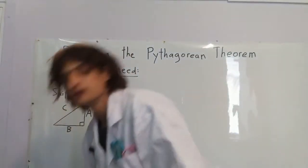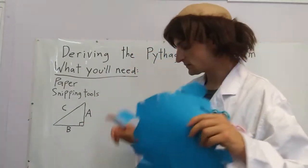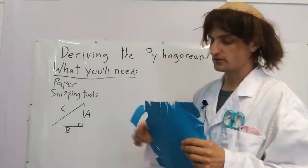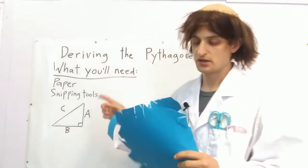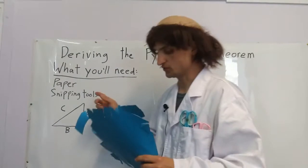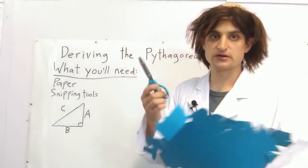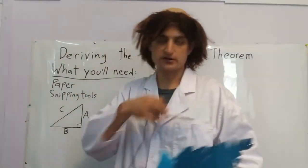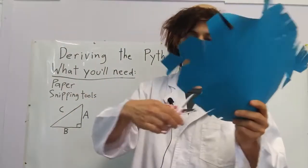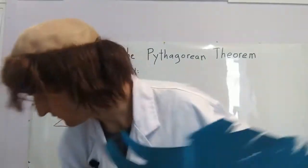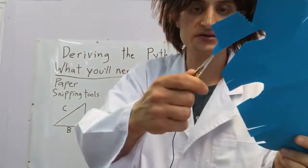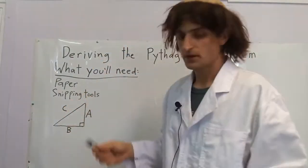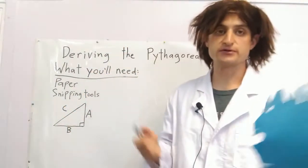Here's what you'll need: some paper and some snipping tools. These ones are available on Microsoft Windows but we're not going to use the virtual ones. We're going to use real old-fashioned snipping tools like scissors. They come in all different shapes and sizes — snippers, shears, trimmers, clippers.